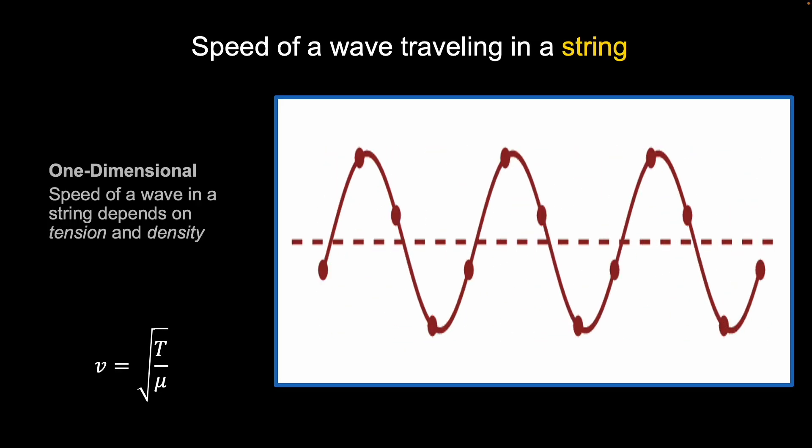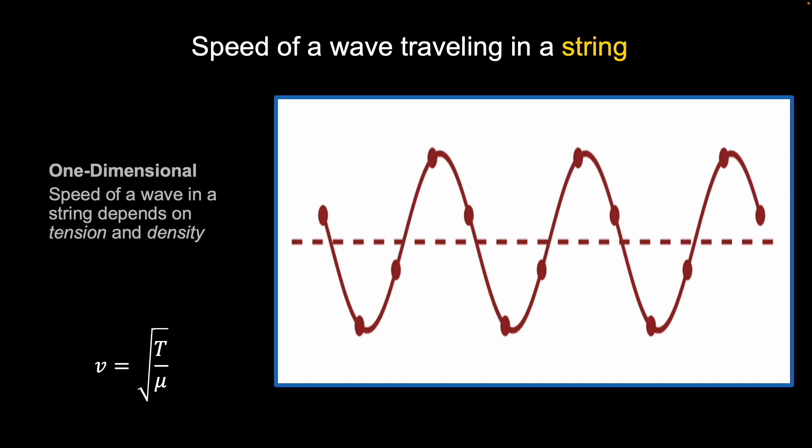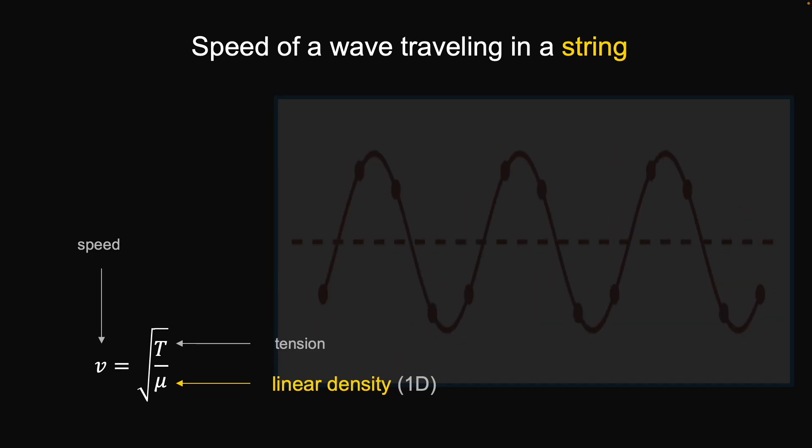Now let's compare that equation to the speed of wave traveling in a string. Why a string? Because it's one-dimensional. It's a line. Pluck a guitar string, for example, and it's going to be based on tension and also density, but now it's called linear density, because it's one dimensional.